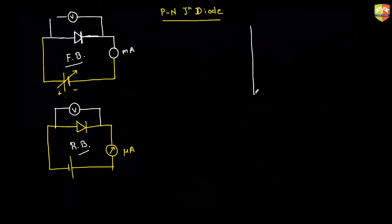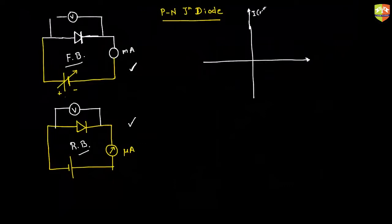If I plot current versus voltage — treating reverse bias as negative voltage and forward bias as positive voltage — this is the characteristic graph. Current in milliamperes is on the y-axis and voltage on the x-axis. Since current also reverses direction, reverse bias current is negative and forward bias current is positive. Forward bias plots in the first quadrant, and reverse bias plots in the third quadrant.